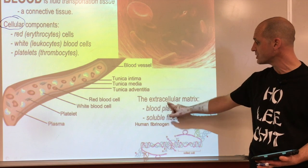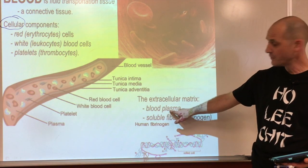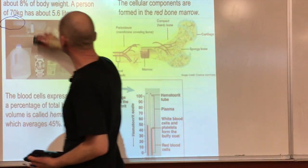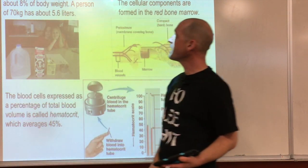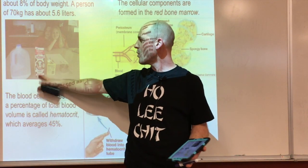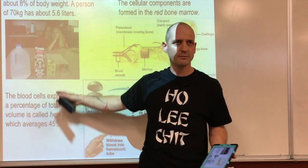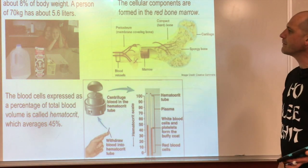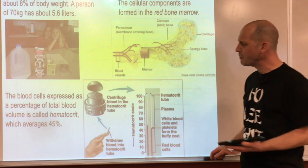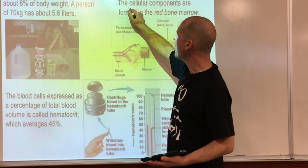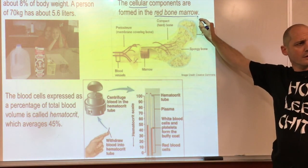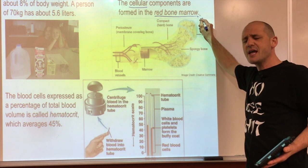Blood has all those connective tissue components - the cells, the extracellular matrix, which is the liquid plasma, and the fibers. In our body, about 8% of our weight is blood. For a person of 70 kilograms, that's about 5.6 liters. All cellular components of blood are made in the red bone marrow.